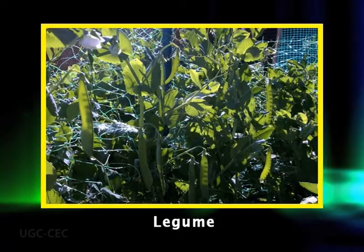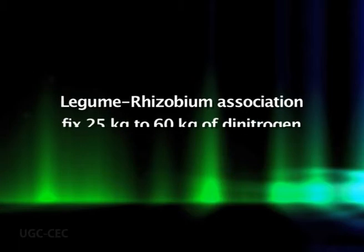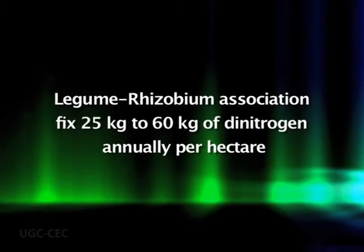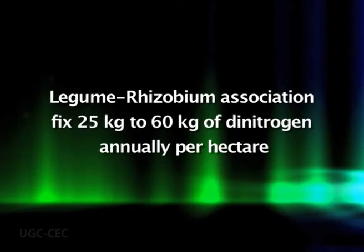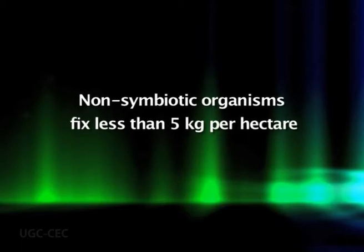Symbiotic nitrogen fixers, particularly legumes, contribute substantially more nitrogen to the soil pool than free-living bacteria. Typically, a hectare of legume-rhizobium association will fix 25 to 60 kg of dinitrogen annually, while non-symbiotic organisms fix less than 5 kg per hectare.